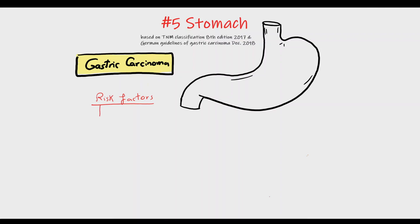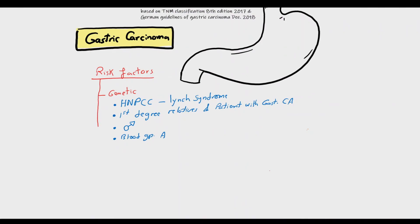First, we will take a look at the risk factors, divided into genetic and acquired. Genetic risk factors include hereditary non-polyposis colorectal carcinoma or Lynch syndrome, first degree relatives of patients with gastric carcinoma, male gender, and blood group A.